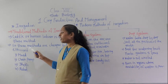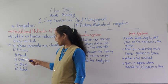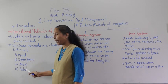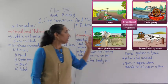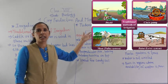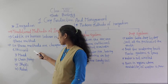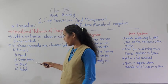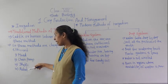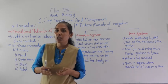There are different traditional methods. We will see which ones they are — moth, chen, perm, dheti, and rahut. You can see in the image how each one exactly looked. So these are the traditional methods of irrigation: moth, chen, perm, dheti, and rahut.